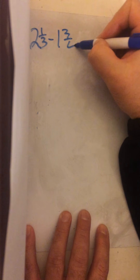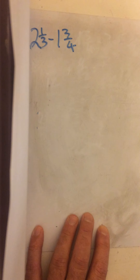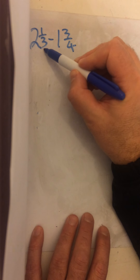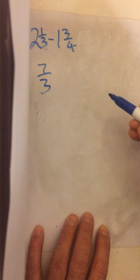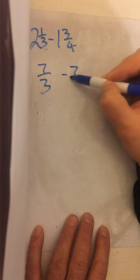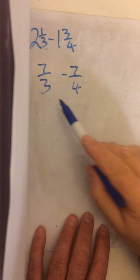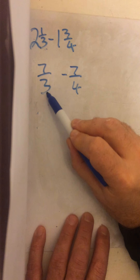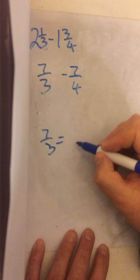Now subtracting: two and one-third minus one and three-quarters. With subtraction, we can't just take away the whole numbers separately like we did with addition, so we convert both to improper fractions. Remember: denominator times the whole number, add the numerator. Three times two plus one is seven, so that's seven-thirds. Four times one plus three is seven, so that's seven over four.